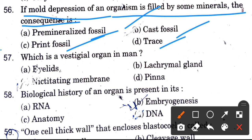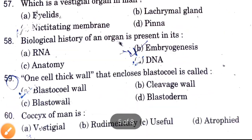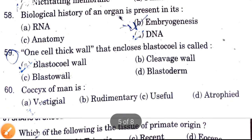Next question: Which is a vestigial organ in men? Options are islet, lacrimal gland, nictitating membrane, and pinna. The answer is nictitating membrane.